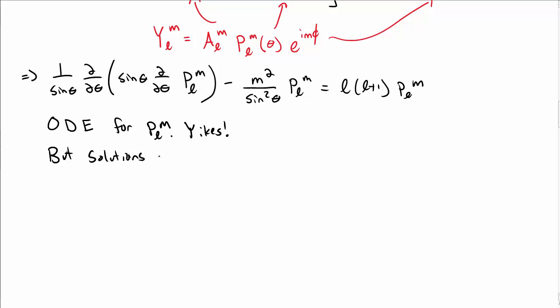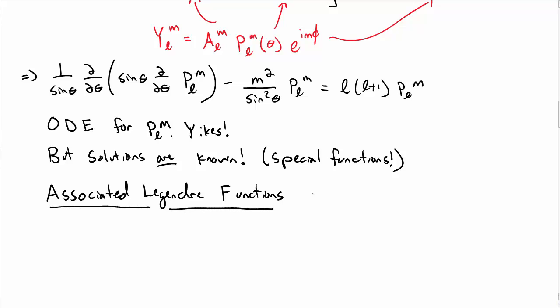So we need to now try and solve this ordinary differential equation for P_lm, and it looks pretty hairy. But it turns out solutions to this differential equation are in fact known. They're a set of special functions, which may not terribly surprise you. And in particular, they are called the associated Legendre functions, not polynomials in this case, the associated Legendre functions.